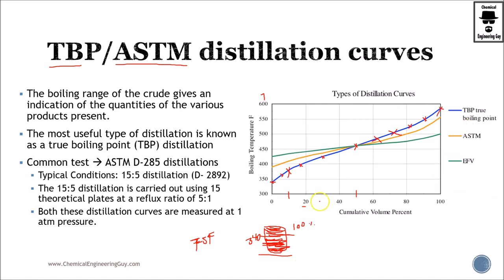The TBP distillation curve is the footprint for our crude oil. With it, we can verify which cuts we are going to get at distinctive temperatures. For example, if your gasoline specification calls for material that boils between 400 and 450 Fahrenheit, you can read off the curve — from about 18% up to 50% volume — giving you roughly 30 to 35% volume from that cut.